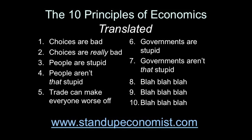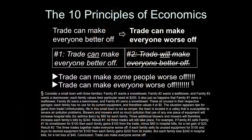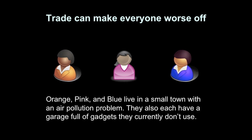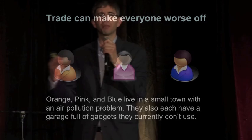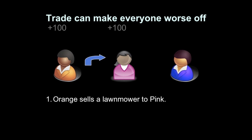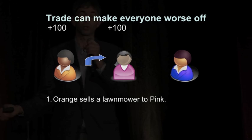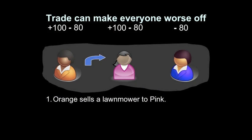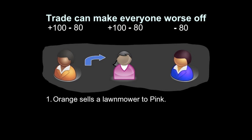So there are the ten principles of economics translated. I want to be serious here for just a couple of minutes and go back to this slide. The idea in the footnote — that trade can make everyone worse off — is actually a real example. Imagine a made-up economics model with three people: orange, pink, and blue. They all live in a small town that has an air pollution problem. Orange sells a lawnmower to pink, and they each get $100 in value from that trade. But when pink starts using the lawnmower, there's air pollution — maybe $80 per person in health impacts — not just for orange and pink, but also for blue, which is the negative externality. Orange and pink each get $20 in net benefit, so they continue to make that trade.